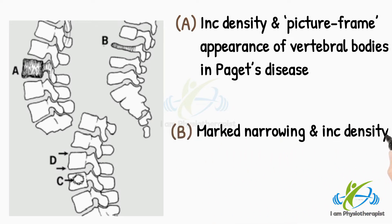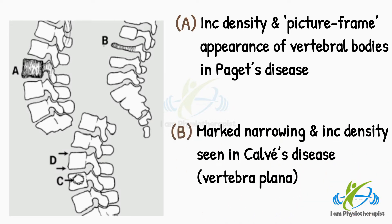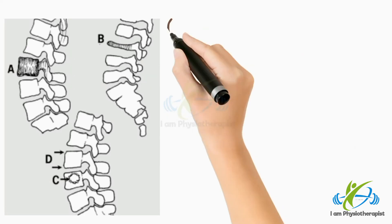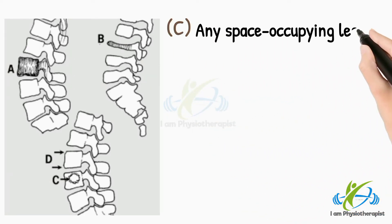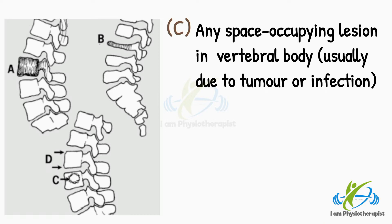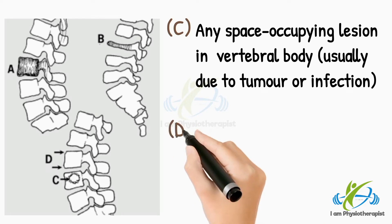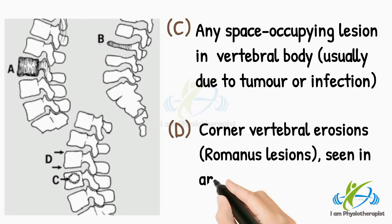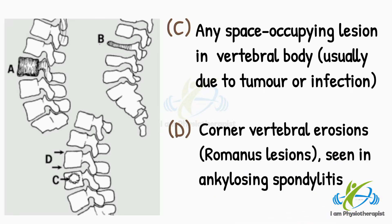Point B shows marked narrowing and increased density seen in Calve's disease — vertebra plana. Point C shows any space-occupying lesion in a vertebral body, usually due to tumour or infection. Point D shows corner vertebral erosions — Romanus lesions — seen in ankylosing spondylitis.